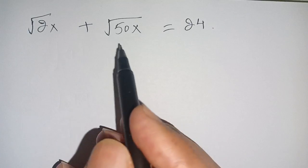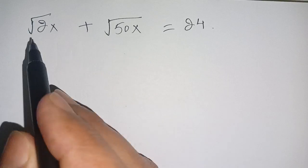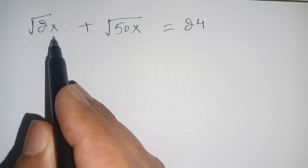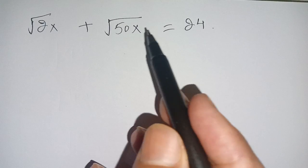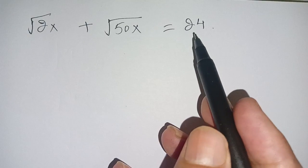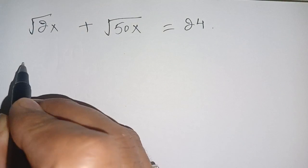Hi everyone. In today's video we are going to solve this radical problem: the square root of 2x plus the square root of 50x is equal to 24. Let us solve this.